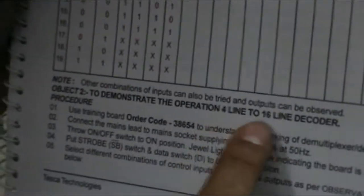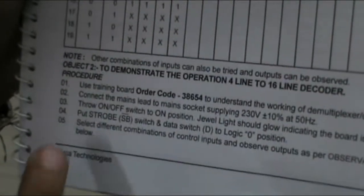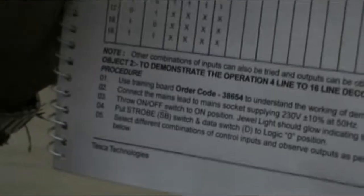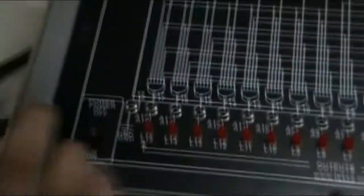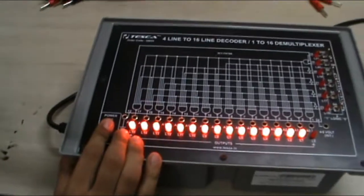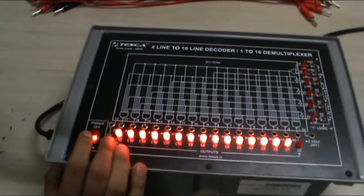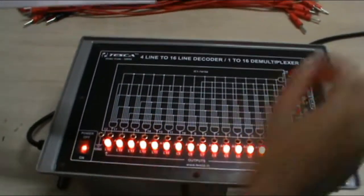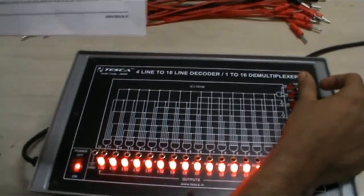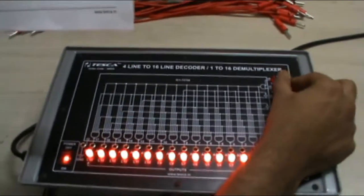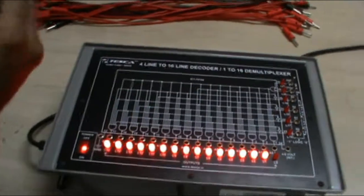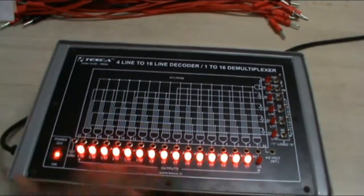Now we move on to the second experiment which is to demonstrate the operation of 4 line to 16 line decoder. We have already connected it to the AC main supply equipment. Now switch on the board. Put strobe SB switch and the data D switch to logic 0. Now select different combinations of inputs and observe the output of the LEDs.